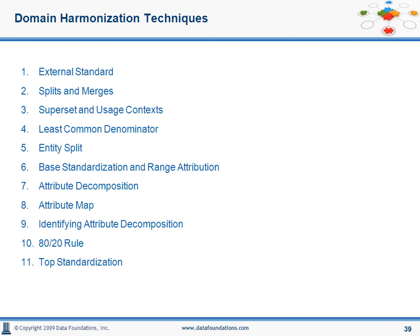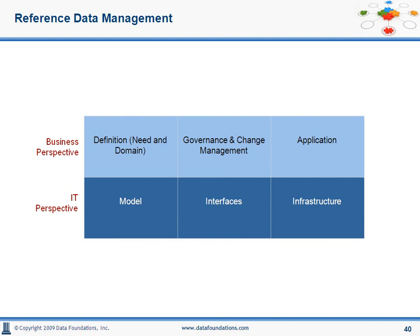Attribute map or matrix is a good solution for hierarchy-to-hierarchy mapping if it cannot be avoided. With that, we complete the discussion on the different techniques and we're going to look at overall reference data management at a high level. Generally, the business focuses on definition, governance, change management, and needs a tool to help them manage reference data. IT, as the support organization, defines the persistent model, infrastructure, and the data interfaces and mapping.